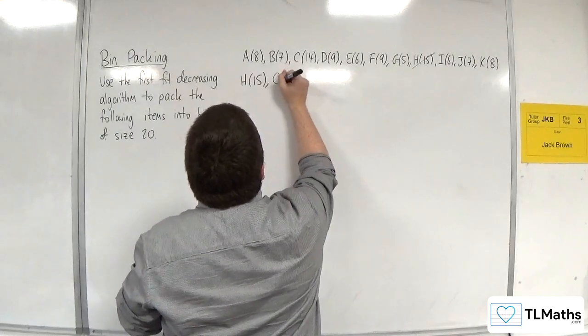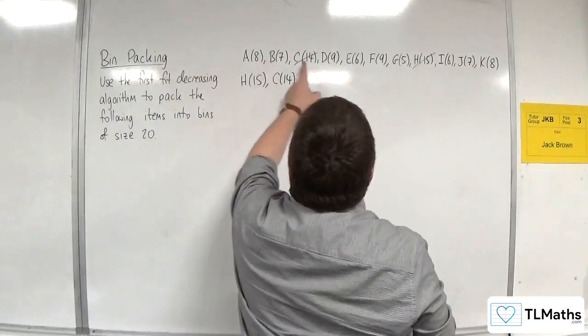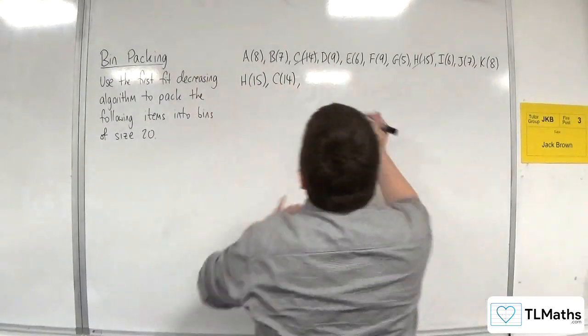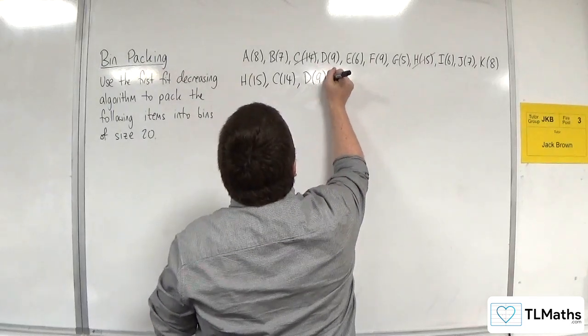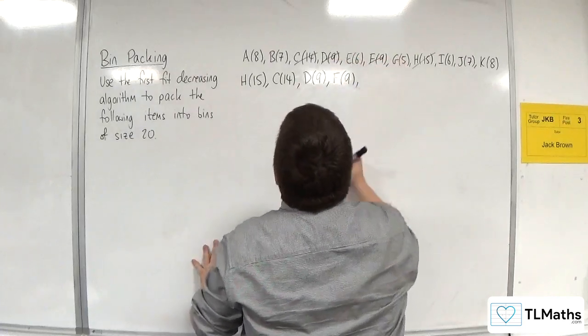Then we've got C, 14. Okay, we've got 9s. So, 9s are next, so it doesn't matter in which order I write them. So, D, 9, F, 9. Okay, got those.